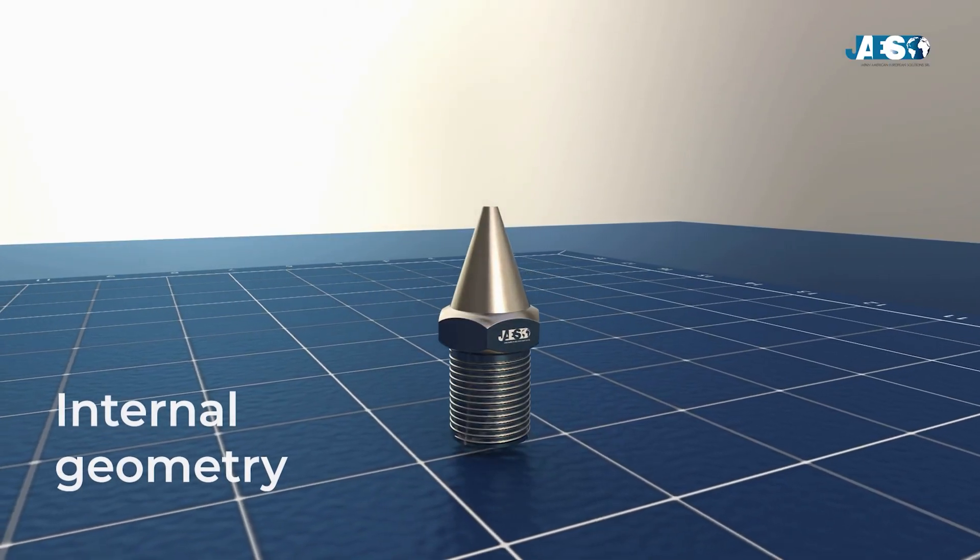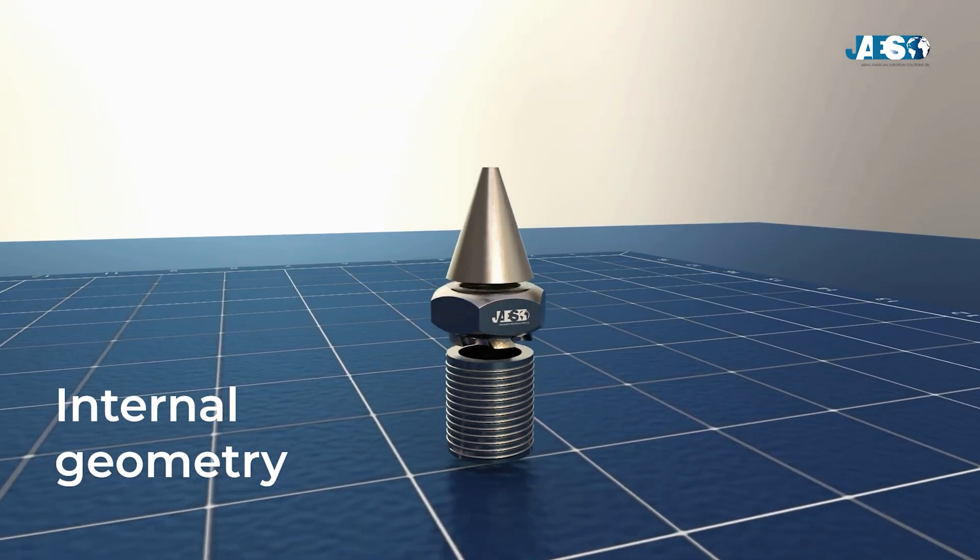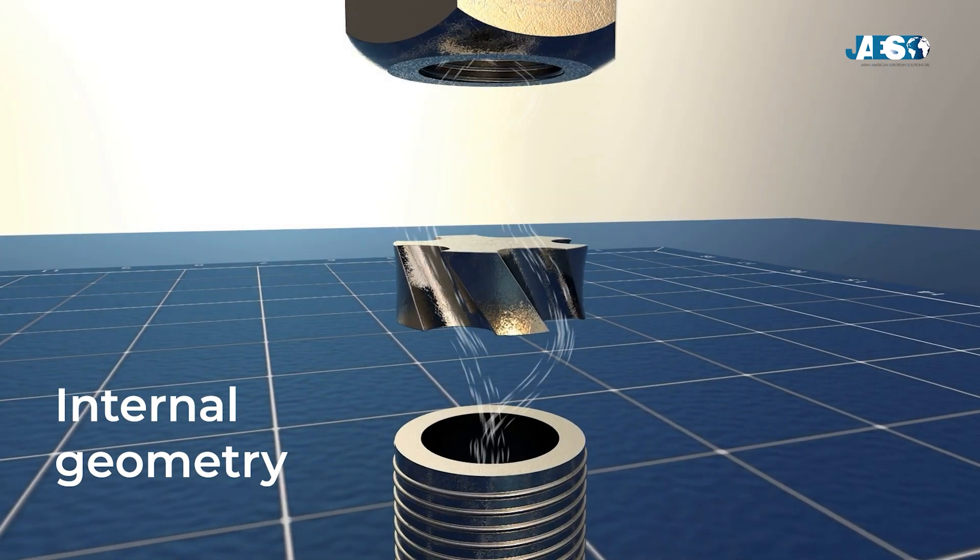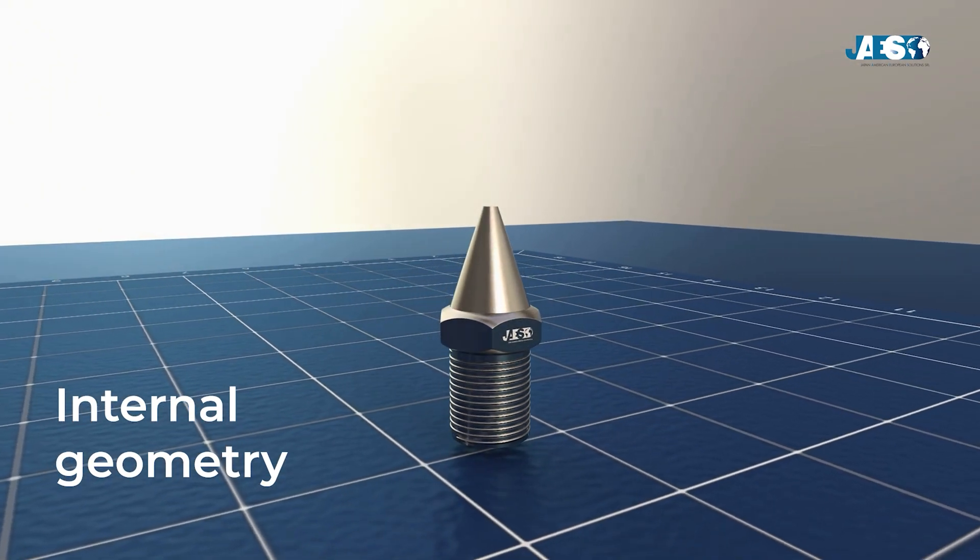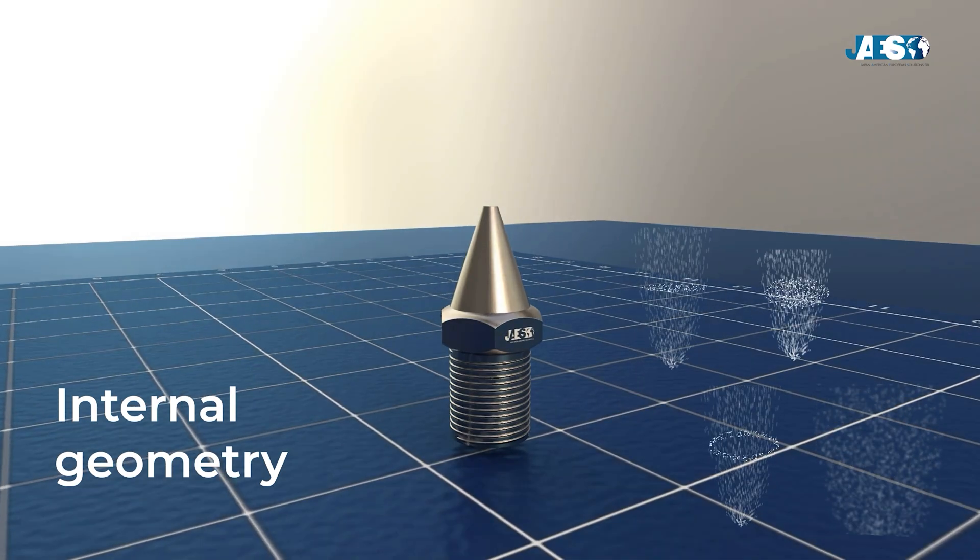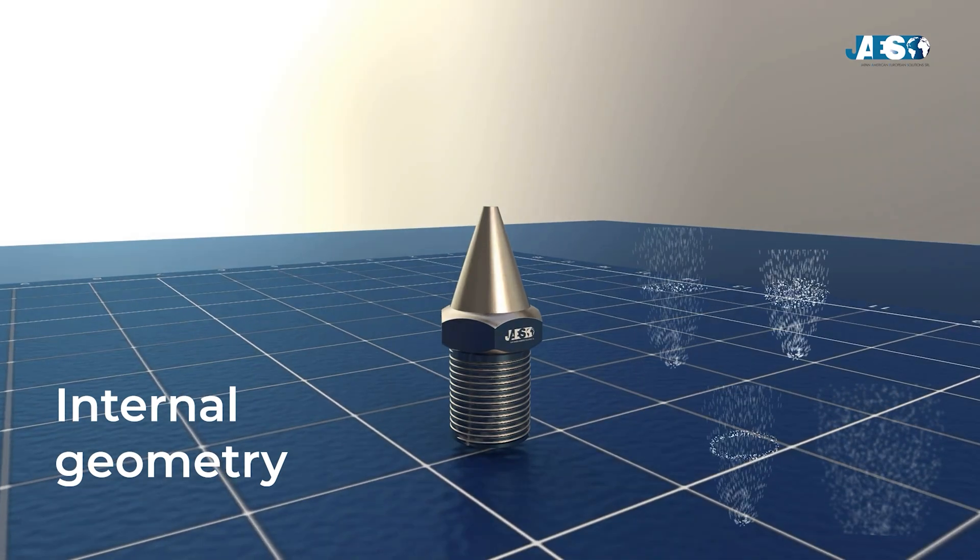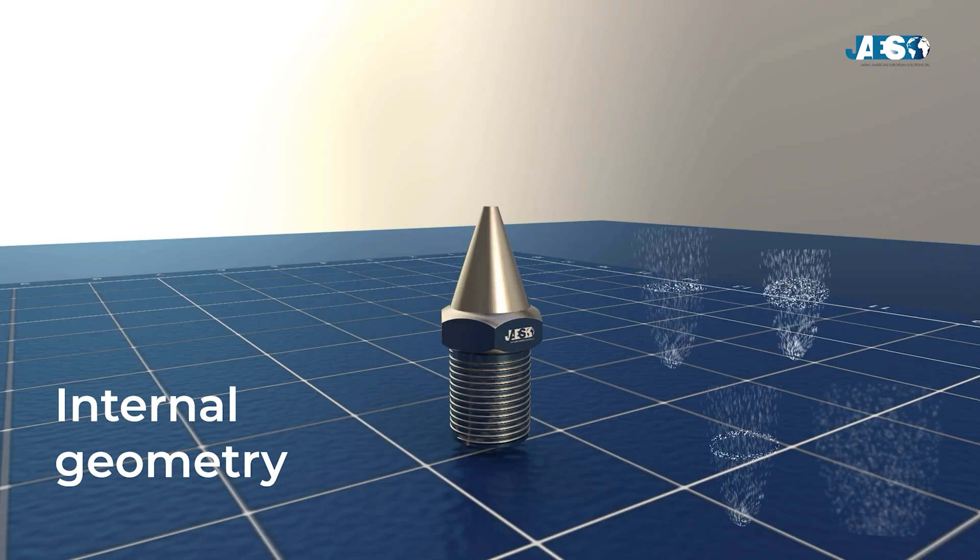Internal geometry: Turbulence chambers, orifices, helical veins, etc. influence jet breakup, creating various spray patterns. Wide fan, full cone, hollow cone, coarse droplets, or fine mist.